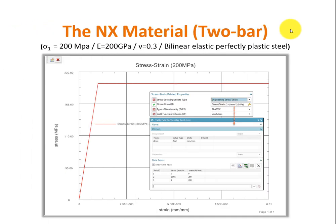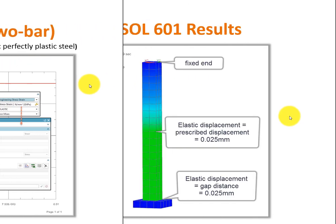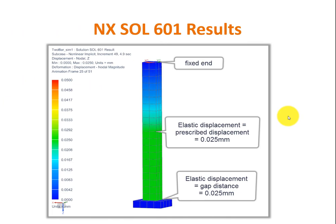This is my material model. With my applied deformation and gap distance set to 0.025 mm, I will stay below the yield stress of 200 MPa. The most important parameter here is the E-modulus of 200 GPa. I will soon show you how to set up and run a nonlinear contact analysis in NX SOL 601.